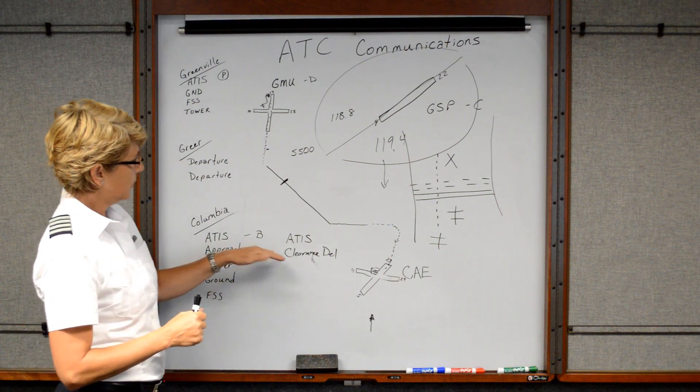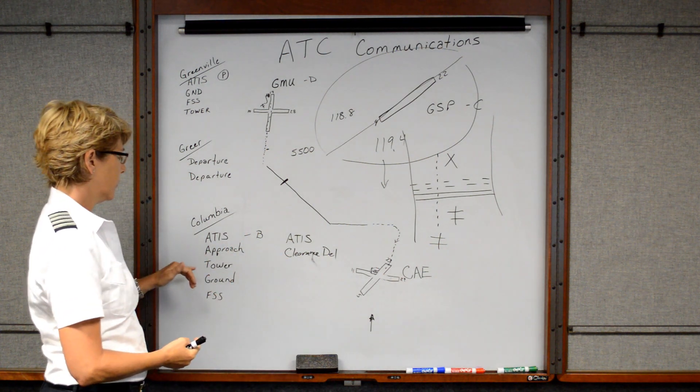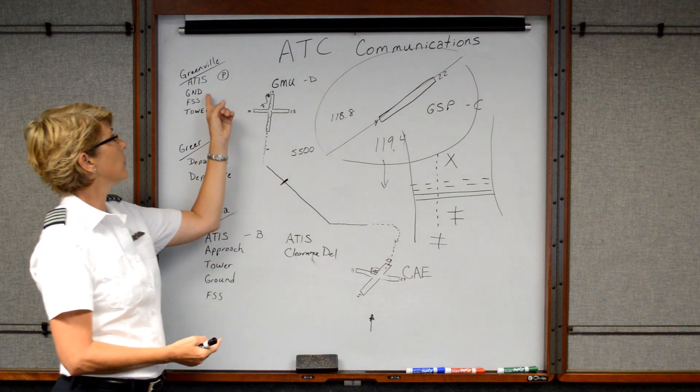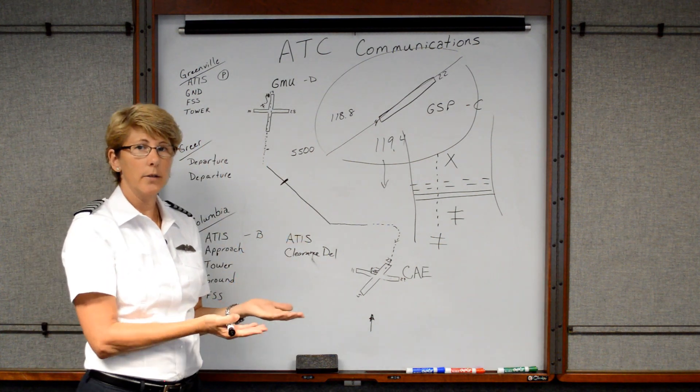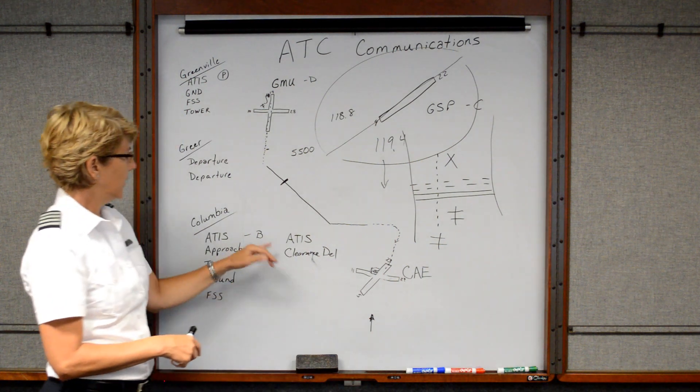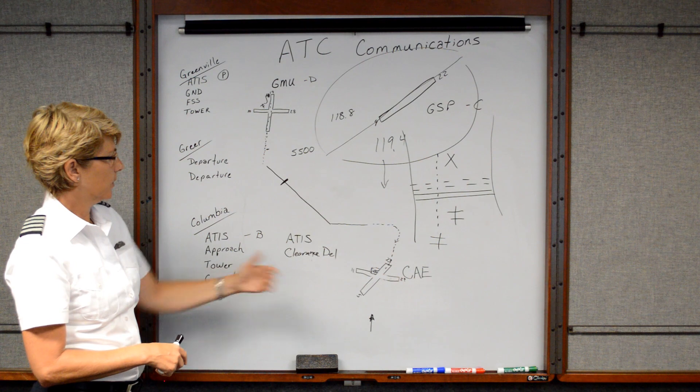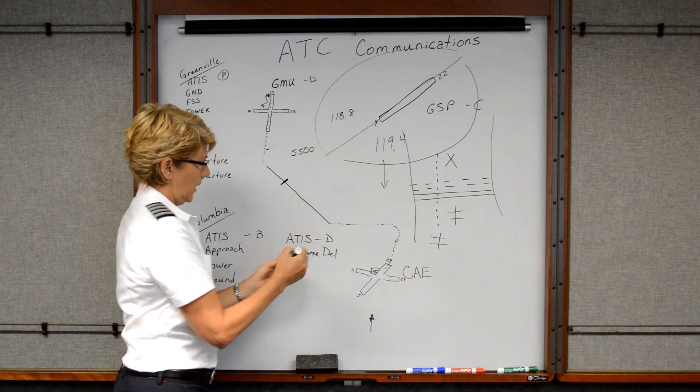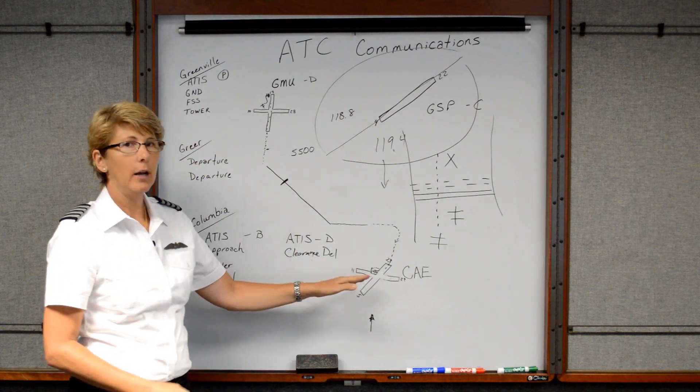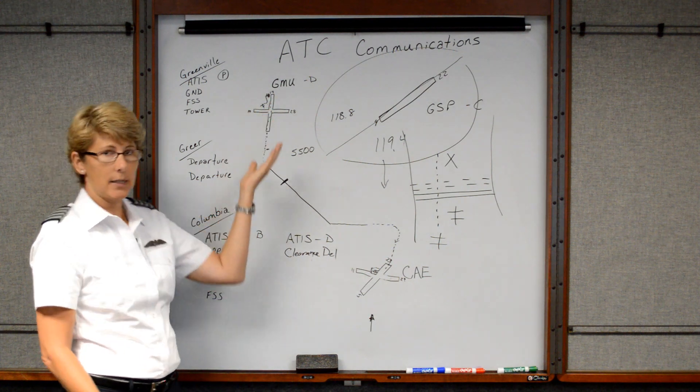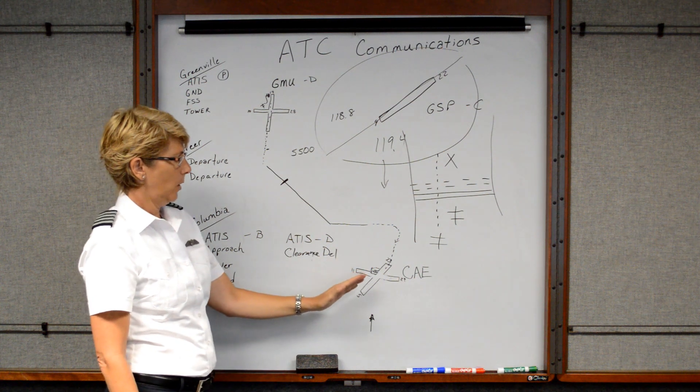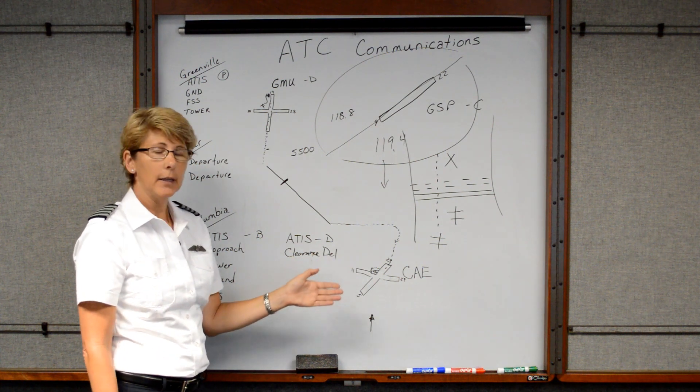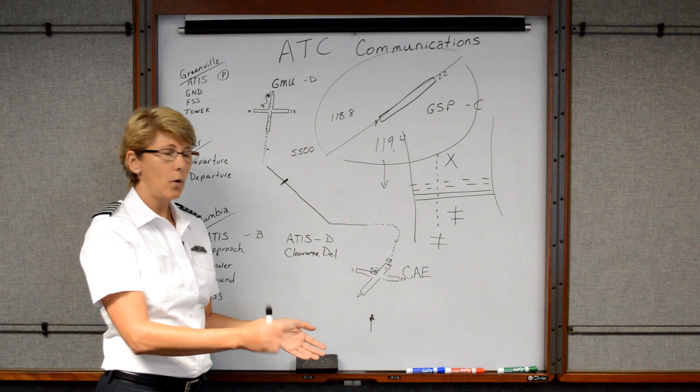Okay, so clearance delivery is used to kind of lighten the workload on the ground control. Now up here in Greenville, we didn't have a clearance delivery because the airport's just not that busy. So ground control serves as a clearance delivery frequency as well as ground control, which is controlling the movement on the ground. But in Columbia, they're a bit busier. So they have a clearance delivery frequency, which we would tell them that we have maybe ATIS information delta, and we want to obtain flight following to fly back to Greenville at 6,500. And then they will give us our information like what runway heading to fly or what heading we fly after departure, as well as the altitude we can climb to and the departure frequency and a new squat code.